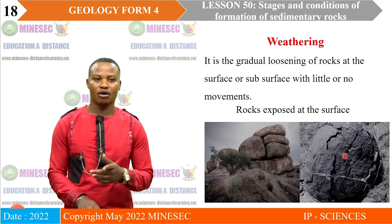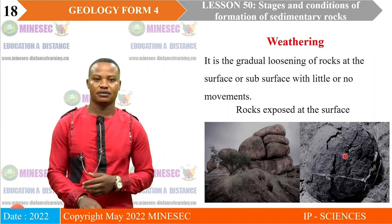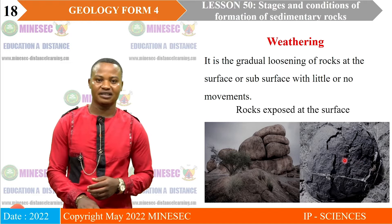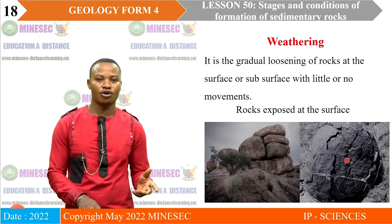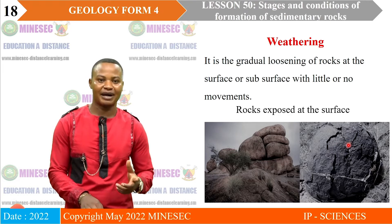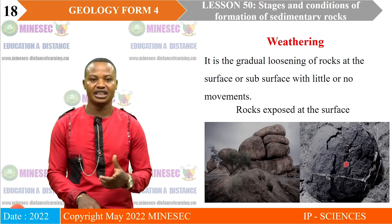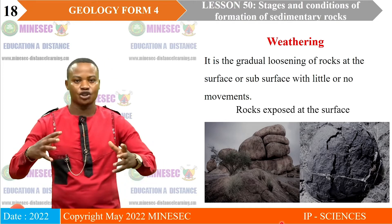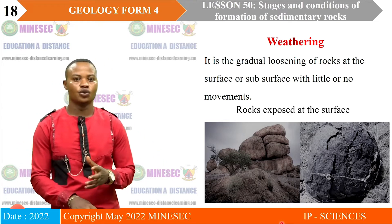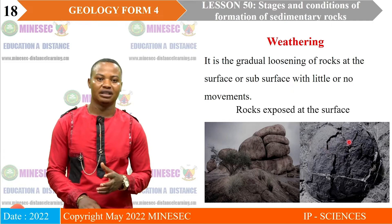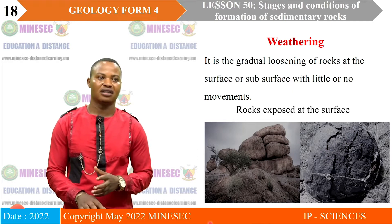Another example: a rock formerly shielded from sunlight, when exposed at the surface, experiences differential heating since rocks are poor conductors of heat. The outermost surface expands during sunny days and contracts during cold nights. This repeated expansion and contraction causes stress and the peeling off of the rock in scales — a process known as exfoliation.